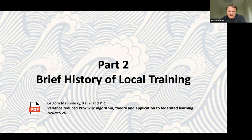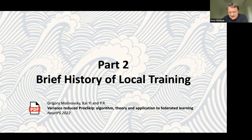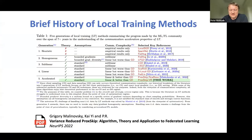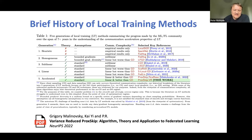Now, the history of local training. We outlined this history in a NeurIPS 2022 paper with Gregory and Kai on variance-reduced ProxSkip. Prior to the actual scientific contributions in that paper, we also have an extended review of the field of local training, and we came up with a classification of local training methods into five generations: heuristic, homogeneous, sublinear, linear, and accelerated. This identification shouldn't be seen as a complete characterization — we're projecting the entire history into a one-dimensional line with five categories — but it's still very useful.